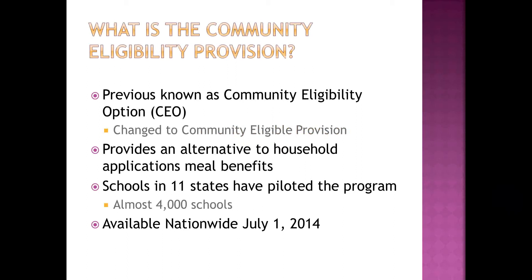So what is the community eligibility provision? It was previously known as the community eligibility option, and they changed the name to be more consistent with other provisions, such as provision 2. It provides an alternative to household applications for meal benefits. Schools in 11 states have piloted the program with almost 4,000 schools participating, and USDA opened it up to see who wanted to pilot it.